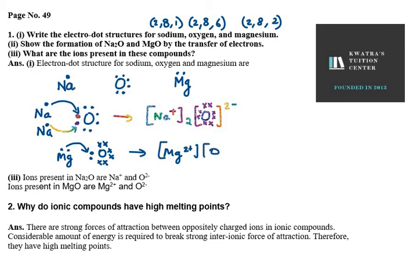So that means Mg 2 plus and we have oxygen here. It will be 2 minus. And inside the bracket you can make all the 8 electrons inside it.